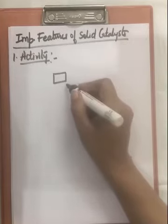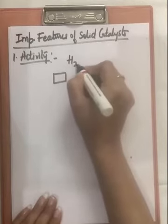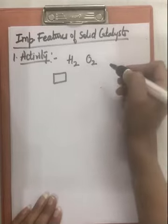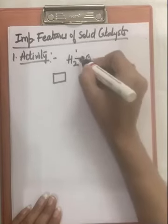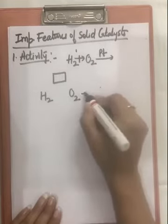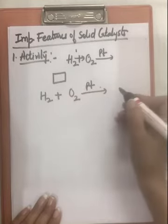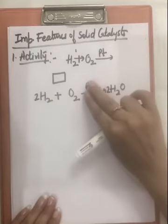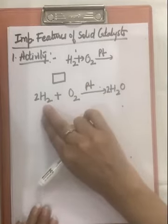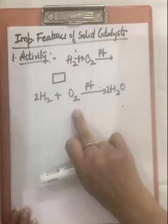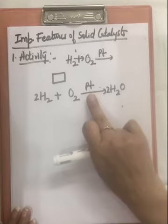The catalyst is used in a reaction only to increase the speed of reaction. For example, a mixture of hydrogen and oxygen does not react at all under normal conditions. But if platinum is added, the two will start reacting and will react with each other to form water. In fact, when platinum is added, the reaction will be highly explosive in nature. That shows the activity of this catalyst.